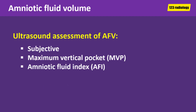Ultrasound is the modality of choice for assessing amniotic fluid volume. The amniotic fluid volume can be assessed by ultrasound using three main indirect parameters. A subjective assessment should be performed at every antenatal ultrasound examination; however, this method doesn't provide a numerical value that can be used to compare patients or follow amniotic fluid volume over time. Amniotic fluid index and maximum vertical pocket are the commonly used semi-quantitative techniques.